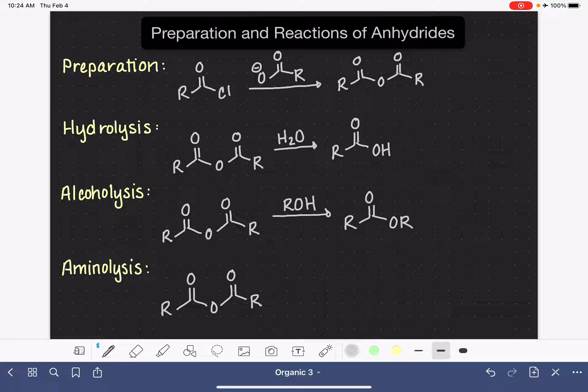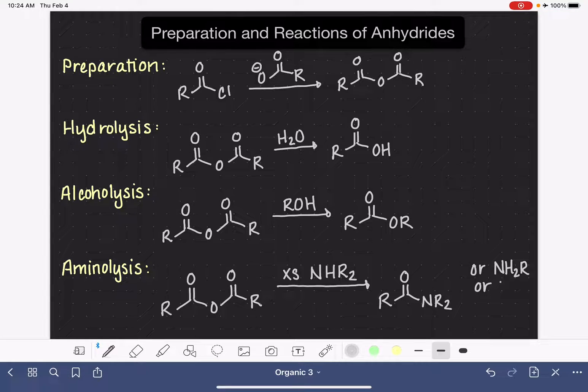For the aminolysis reaction, we are going to need excess of our amine. Our amine needs to have at least one hydrogen on it, and then either two alkyl groups or two more hydrogens or one more hydrogen with one more alkyl group. This is going to give us an amide. I'll make a note over here that we could also use NH2R, or we could use NH3.